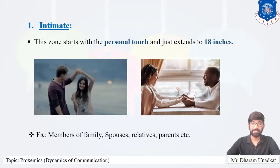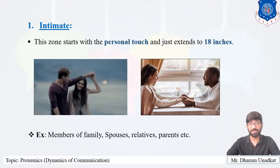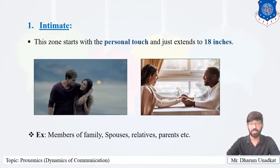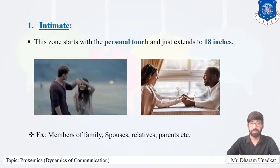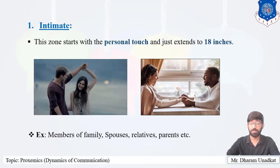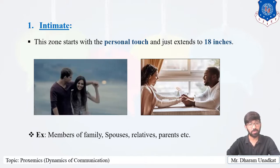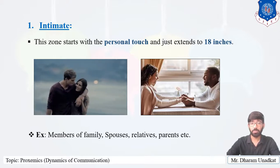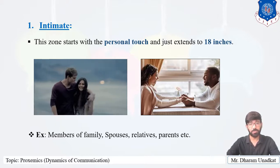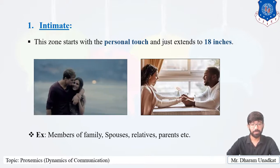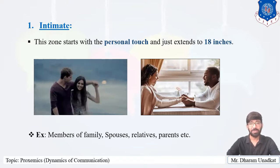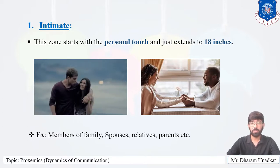The first zone is intimate. This zone starts with personal touch and extends to 18 inches. Examples include members of family, lovers, spouses, relatives, and parents. The best relationship that describes it is the mother-child relationship. This zone does not require active conversation — one can whisper or make unintelligible sounds and still communicate. Others enter this zone briefly under special circumstances such as congratulating, sympathizing, or consoling. A handshake, a pat on the back, or a hug all fall under this zone.